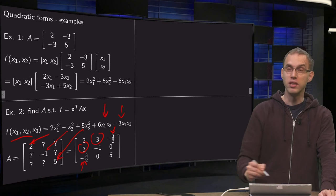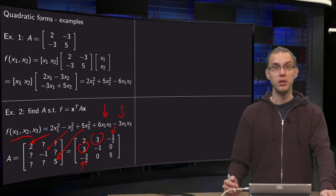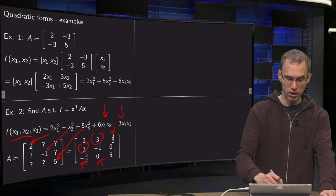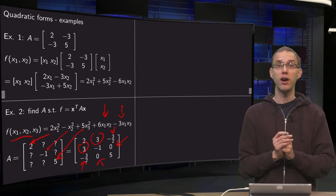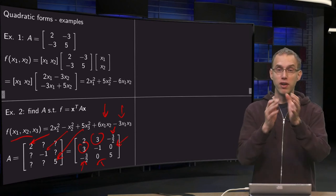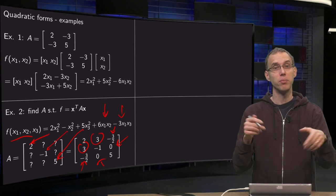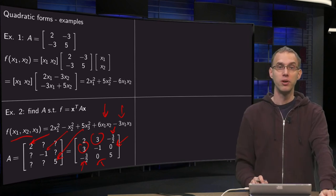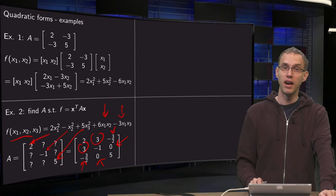What about the 2,3 term? Well, there is no x2x3 so those get a 0. So there you have your matrix A. You see if you have your quadratic form you can immediately write down what your matrix A is and vice versa.